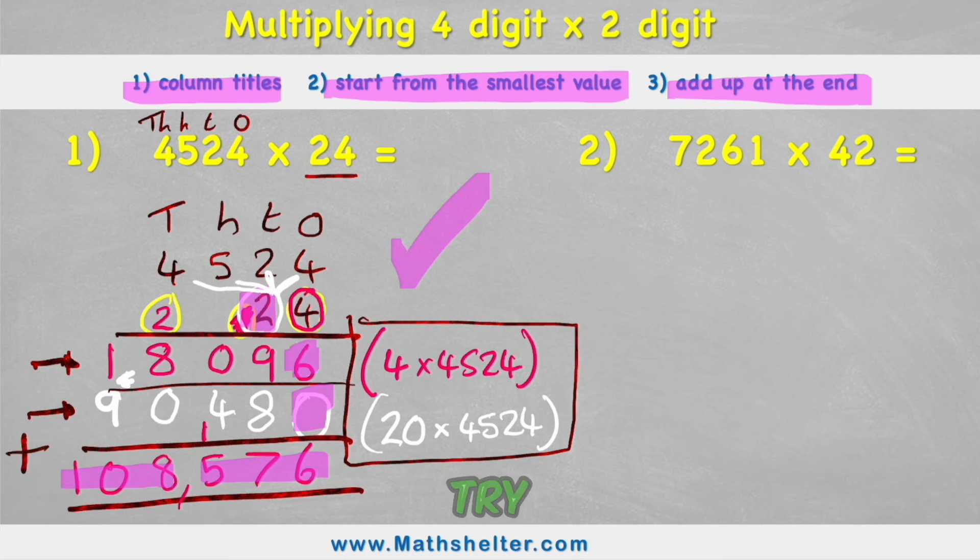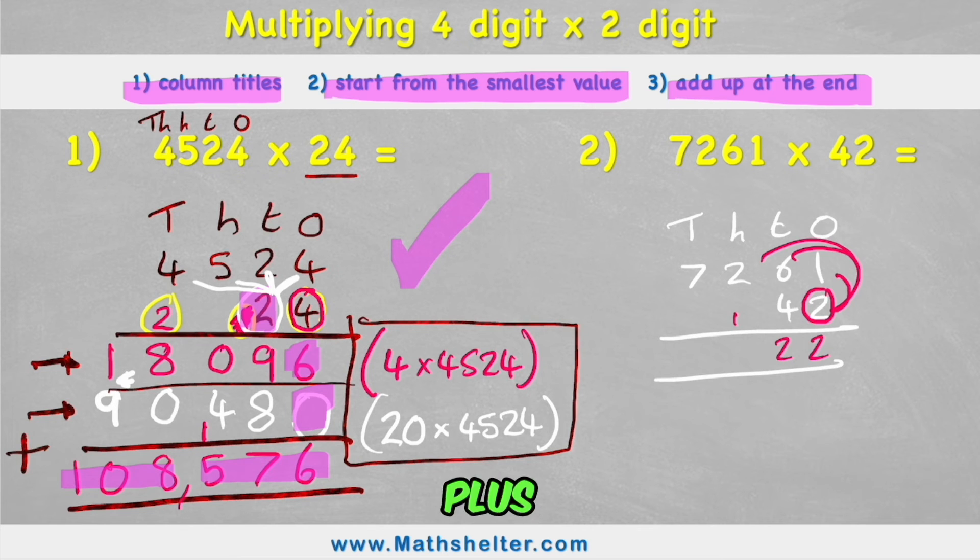Okay, let's have a look at question 2 and I'm going to try and do this really fast. So I have 1s, 10s, 100s and 1000s again. And I have 7,261 times 42. So I'm going to start with the smallest value which is this 2. 2 times 1 is 2. 2 times 6 is 12. 2 times 2 is 4 plus my 1 is 5. 2 times 7, 14. Put it straight in. Get rid of that 1 so I don't add it up at the end.